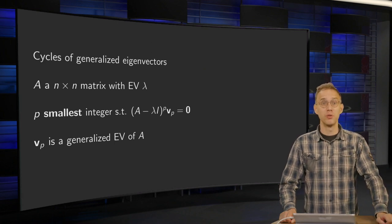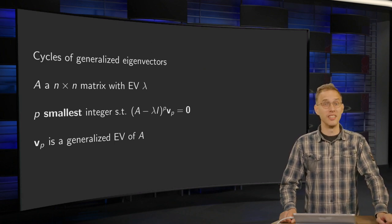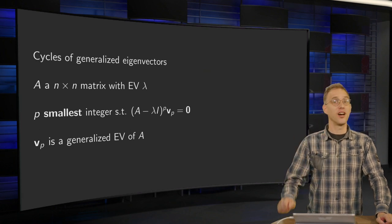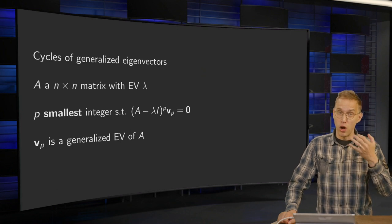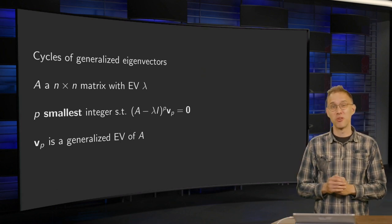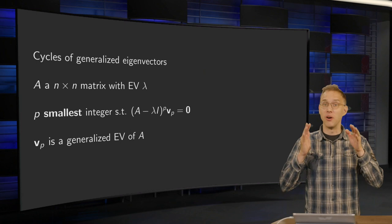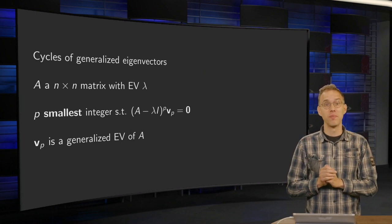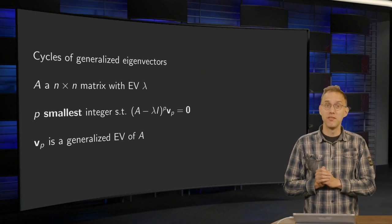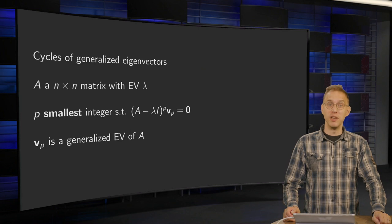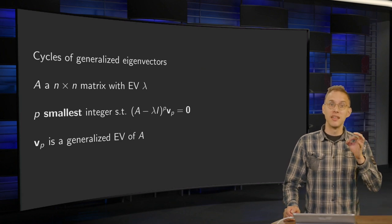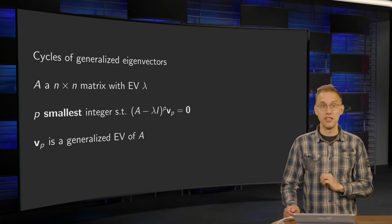How are we going to compute all the generalized eigenvectors of a matrix? Let us start with some good news: they do not come alone, but they come in sets — so-called cycles. So if you have found one, you can immediately find a whole cycle. What do we mean by a cycle? That is what you will see in this video.